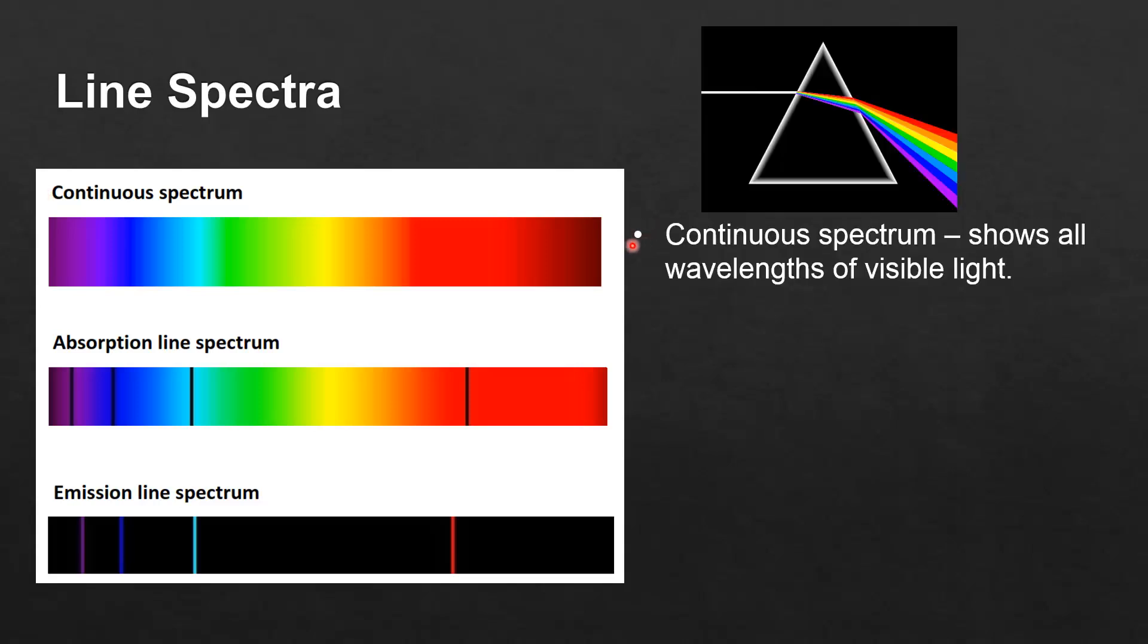So we'll start with the continuous spectrum. The continuous spectrum shows all the wavelengths of visible light from red to violet. If you pass white light through a prism you have dispersion and the white light splits up into all the wavelengths of visible light from red to violet.